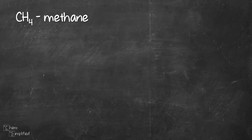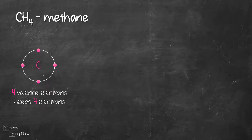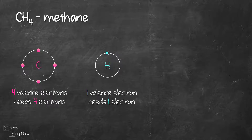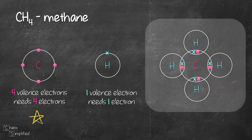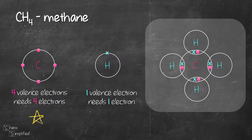Next is CH4, methane. Carbon has four valence electrons and needs four more to achieve octet. Hydrogen needs one more. So we're going to place carbon in the center, surround it with four hydrogens. Each atom is going to share one electron to form a bond — one comes from hydrogen, one comes from carbon. Since hydrogen only has one valence electron, we've used up the electron for hydrogen, and carbon only has four so we've also used up all four electrons for carbon.